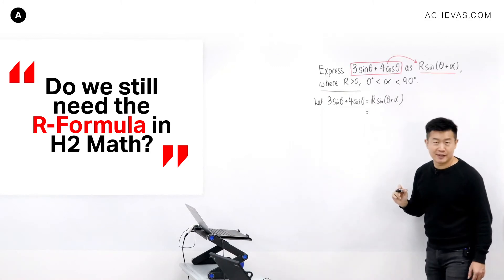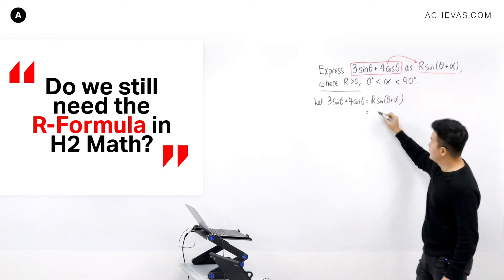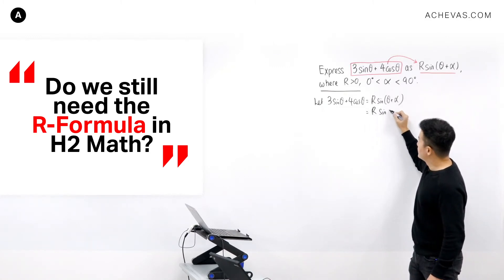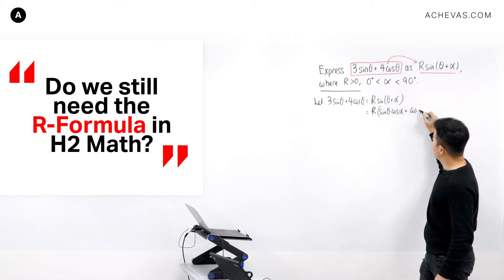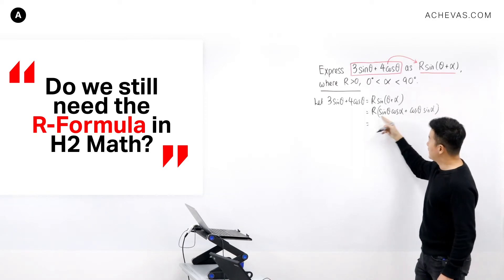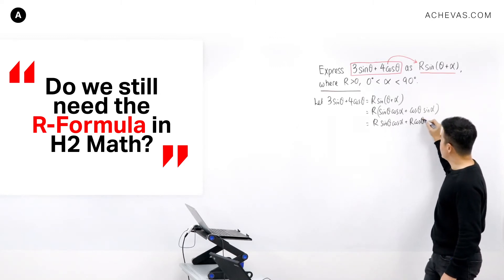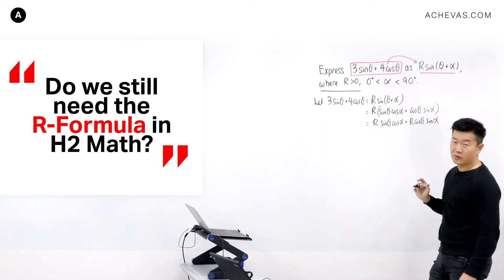Then we will re-express this using trigonometric identity, which is sine theta plus alpha equals sine theta cosine alpha plus cosine theta sine alpha. Expanding R, it will be R sine theta cosine alpha plus R cosine theta sine alpha.